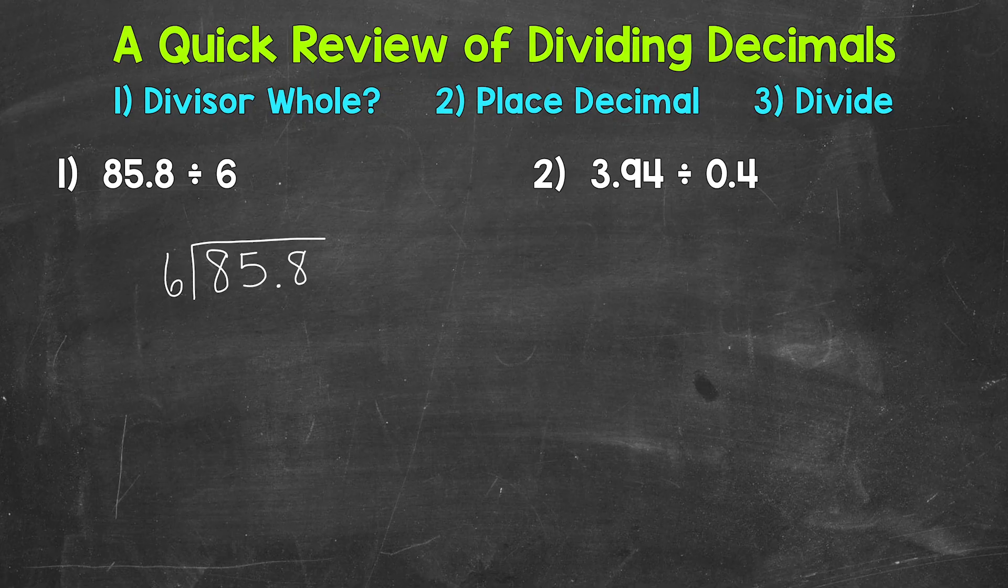Is our divisor a whole number? If yes, our decimal goes straight up into our answer. For number 1, our divisor is whole. We have a 6. So let's bring that decimal straight up into our answer. So our decimal is placed and we are ready to move on.